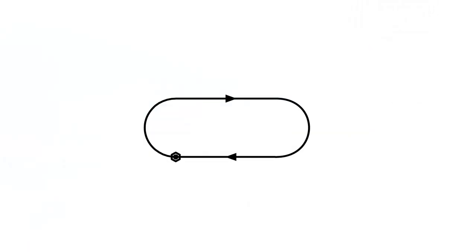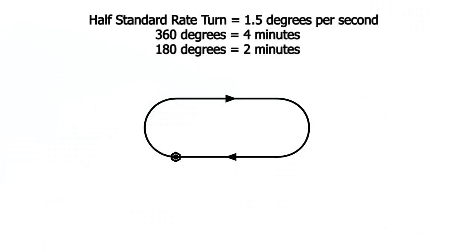For airliners, we're going to use half standard rate turns. What is a half standard rate turn? Half standard rate turn is a turn that has a rate of turn of 1.5 degrees a second, meaning that a full 360 degree circle is completed in 4 minutes instead of 2, and a 180 degree turn is completed in 2 minutes instead of 1. So for airliners, we're going to use half standard rate turns and double our times.